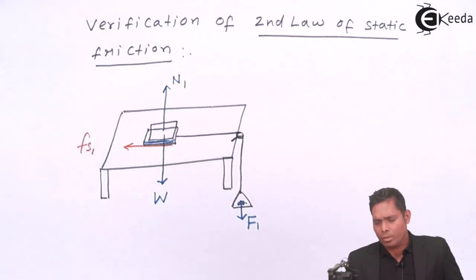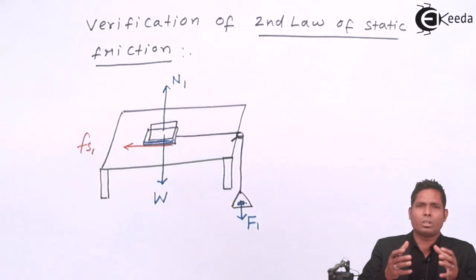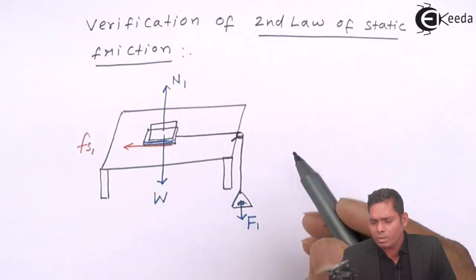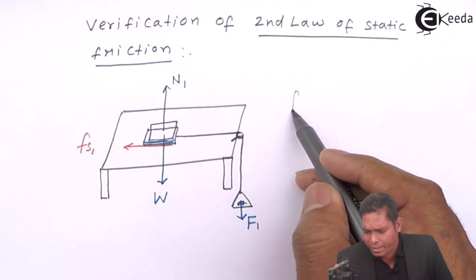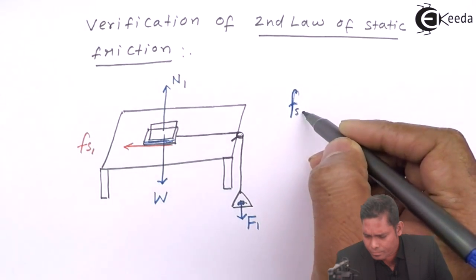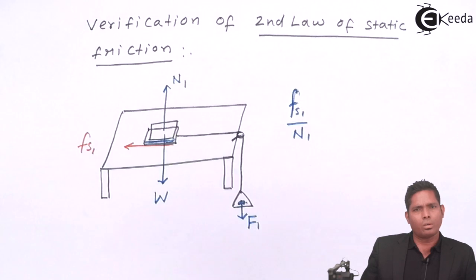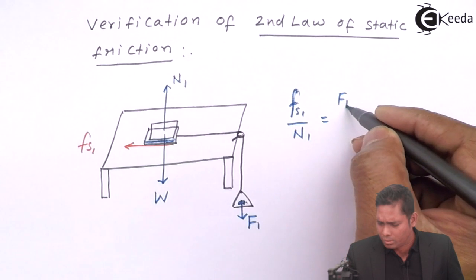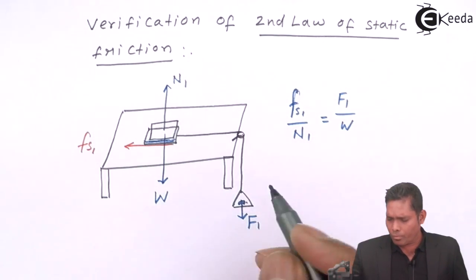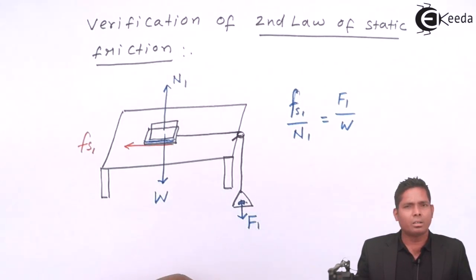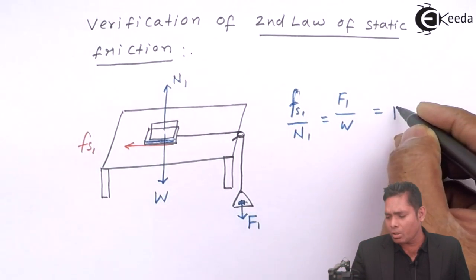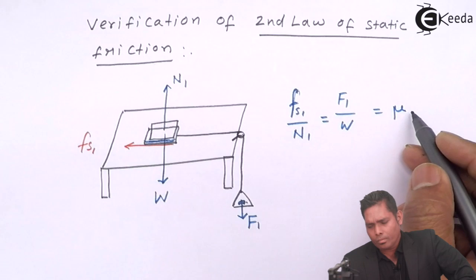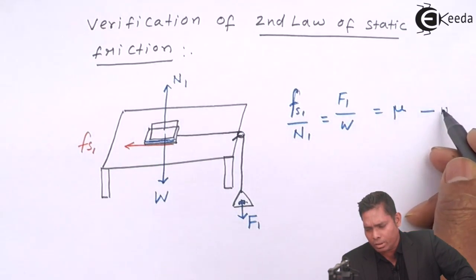So, in this situation, when the area of contact of the two blocks, one placed over the other, is because of the area of one block only, it is found that when I find Fs1 over N1, that is equal to F1 over W, because as usual, as used to do, used to find the ratio to get the value of coefficient of static friction. So, suppose this is μs0, and whatever is that, I write it equation number 1.